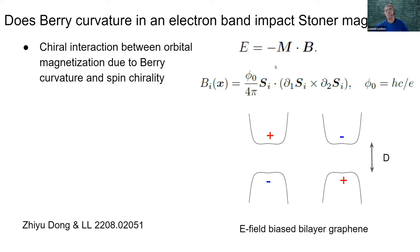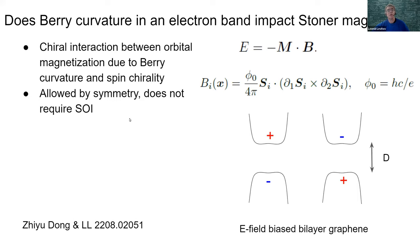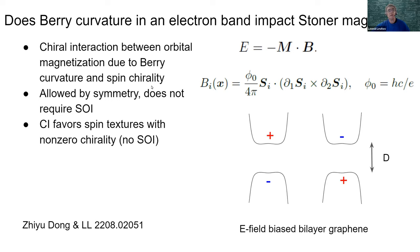The goal is to derive this interaction and discuss its effects. This interaction is allowed by symmetry, so it has to be there for general reasons. Interestingly, it is an interaction between a spin quantity B and an orbital quantity m, arising without any spin-orbit interaction — so it is an interesting case of what we can call synthetic spin-orbit interaction.